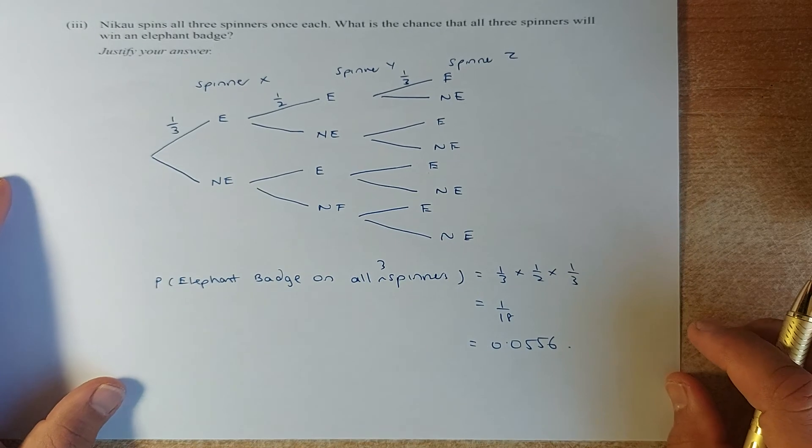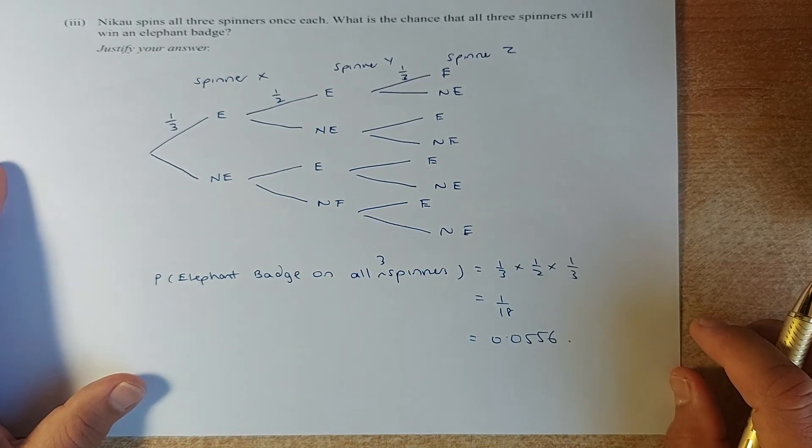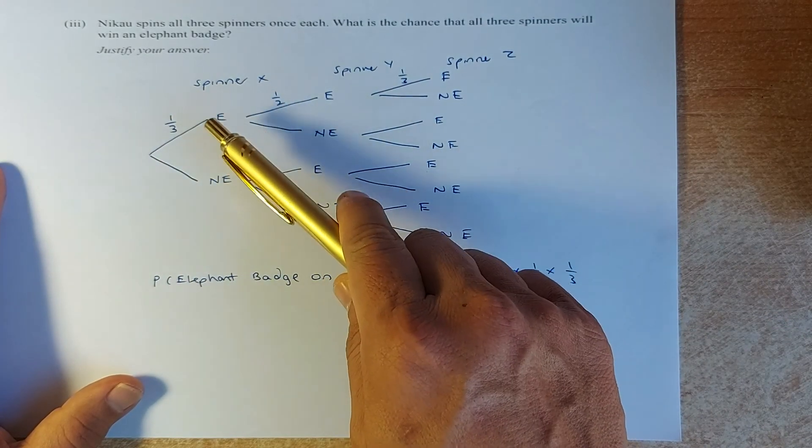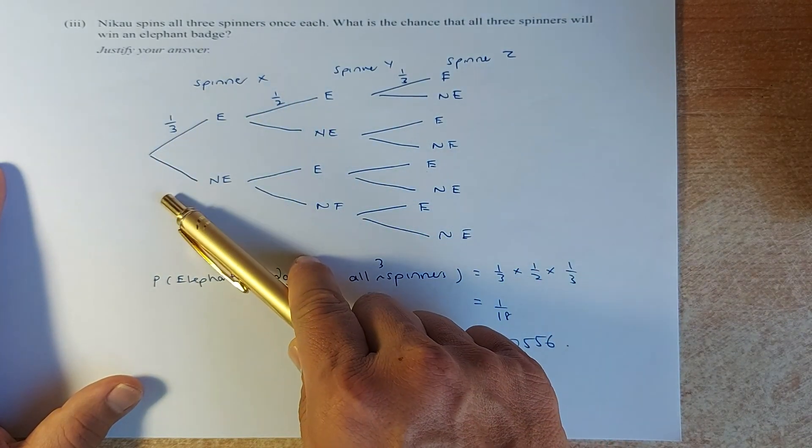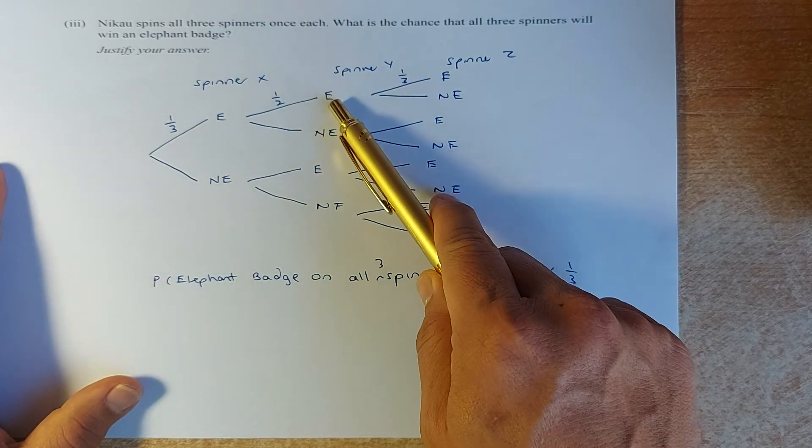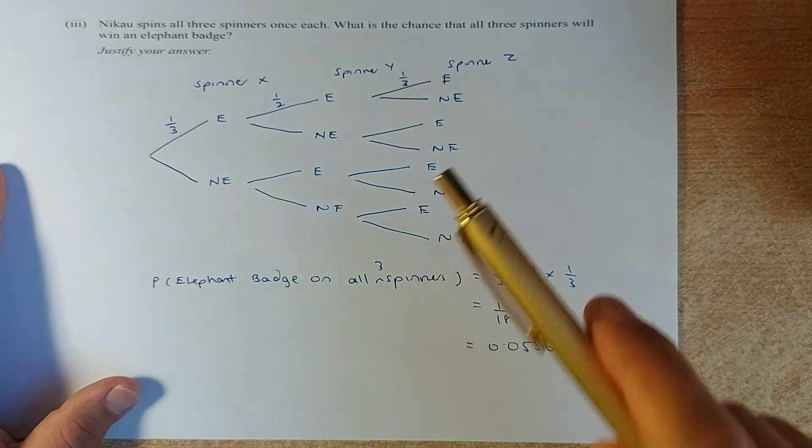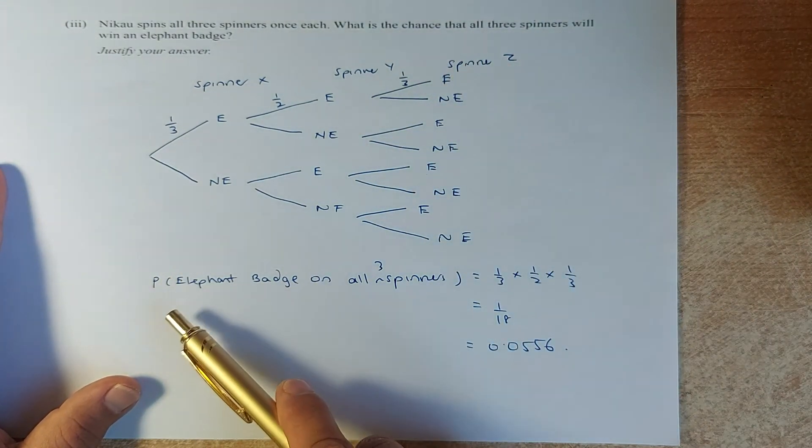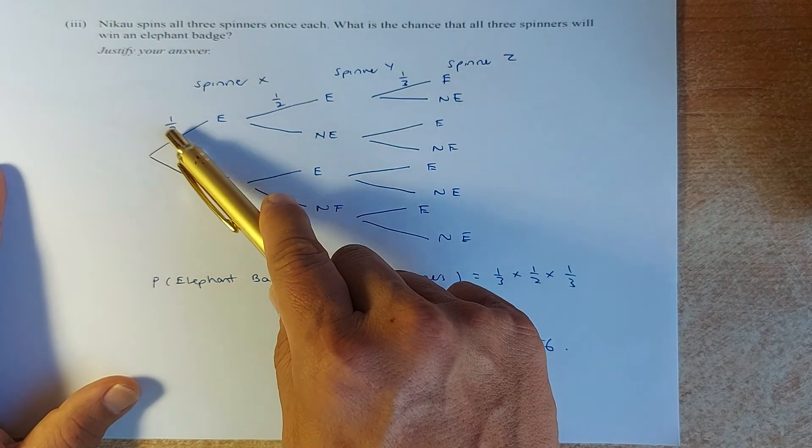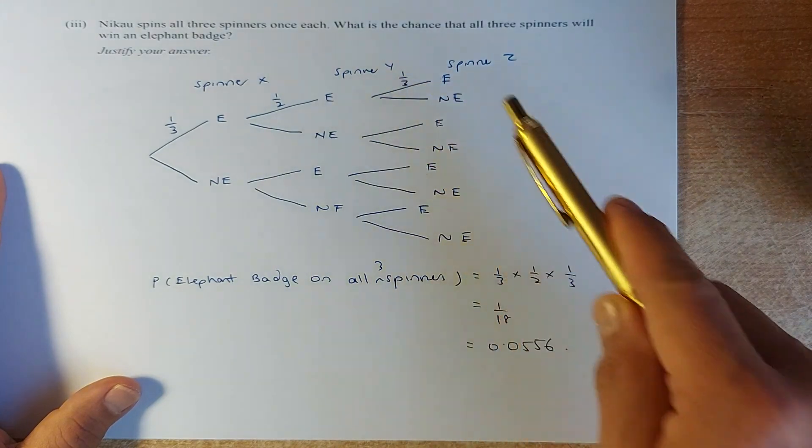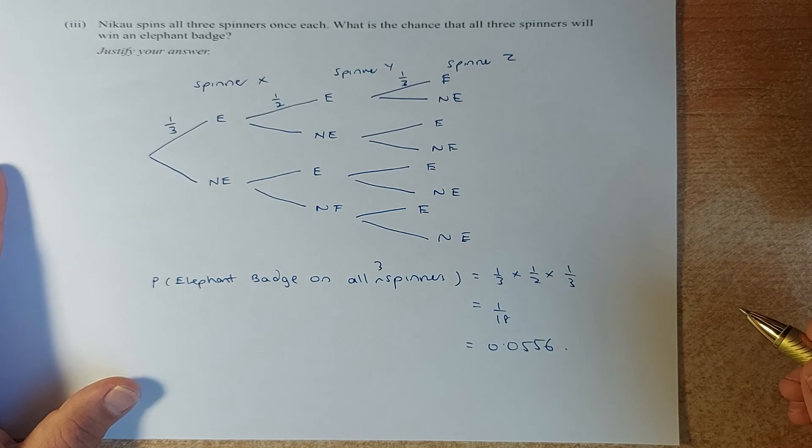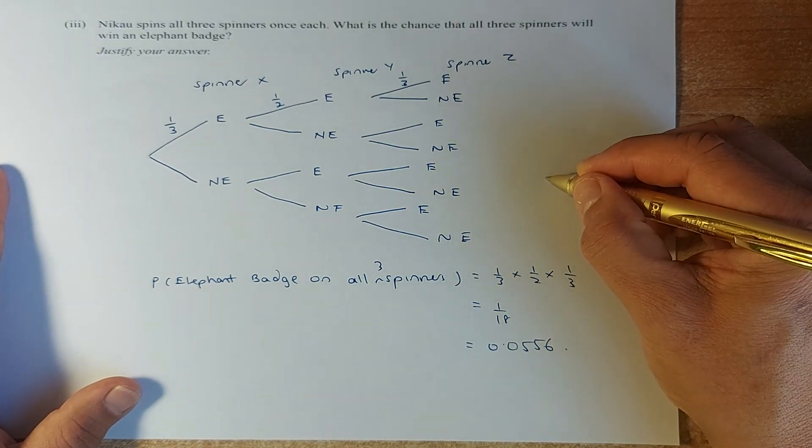And the last question. Nikos spin all three spinners. What is the chance that all three spinners will win an elephant badge? So spinner X, if Nikos spin, the chances is one third, not elephant is two third. So we're not worried about not elephant at the moment. So the spinner Y, the chances is half because three out of six and then spinner Z is one out of three. So the question asks you, what is the probability that elephant badge appear on three spinners? So you take one third times half times one third and that will give you one over 18. And the answer is 0.0556. And that will give you an easy achieve.